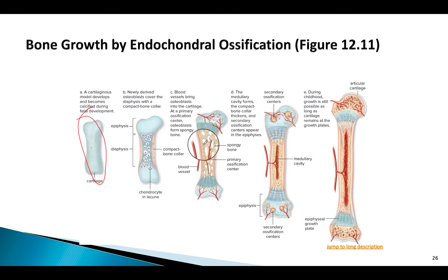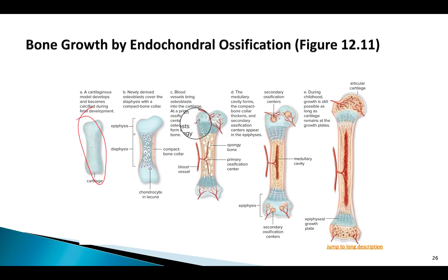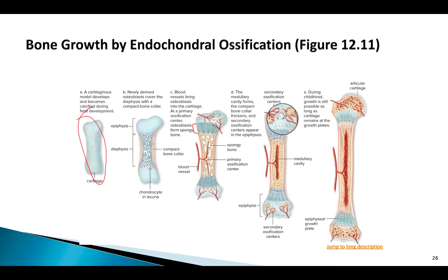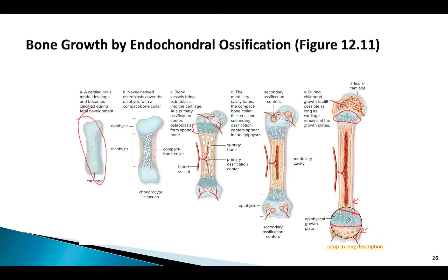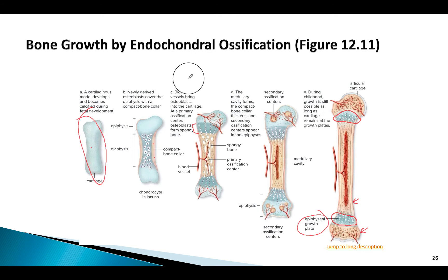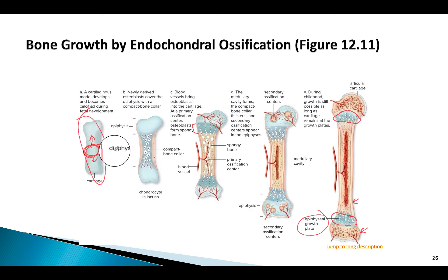As the bone elongates, calcification occurs in the middle, while cartilage remains at the ends — specifically at the epiphysis. This remaining cartilage area becomes the epiphysial plate. Over time, the epiphysis also becomes calcified, but cartilage persists at each end, sandwiched between bone on either side — these are your epiphysial growth plates. In endochondral ossification, the cartilage calcifies starting from the center and progresses outward.